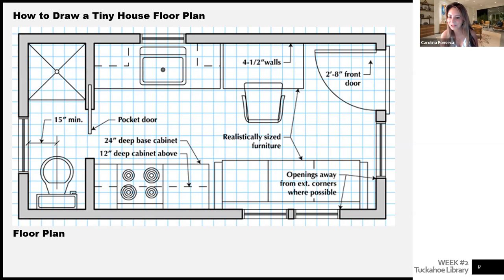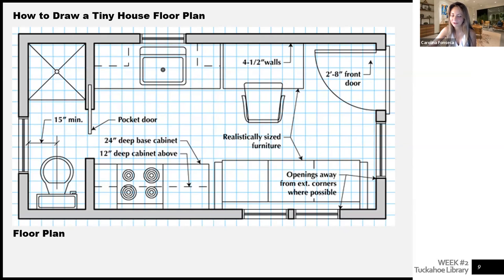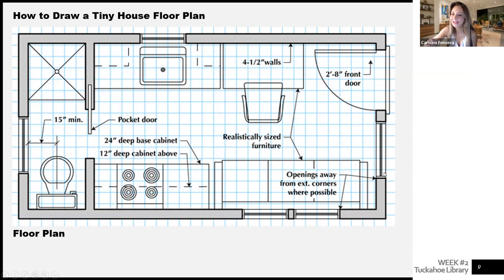To the right of the door, we have what we call openings — typically placed away from exterior corners for stability. The moment we poke through a wall for openings, we lose stability, and natural forces like wind are a problem. This is how we represent a window: this is the window frame, and this is how we see the glass from above.